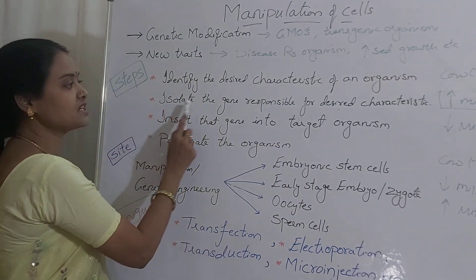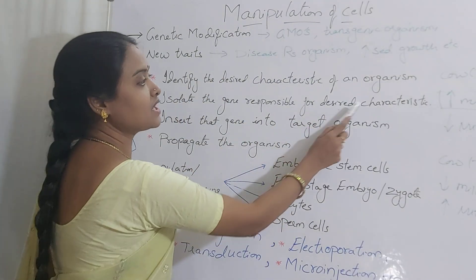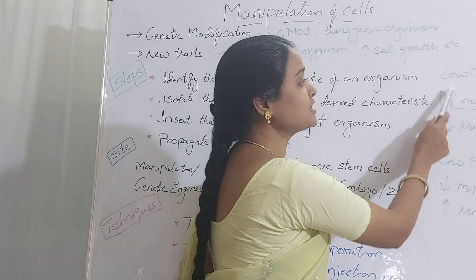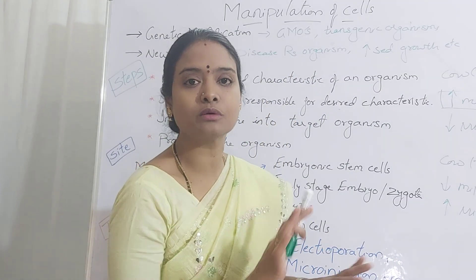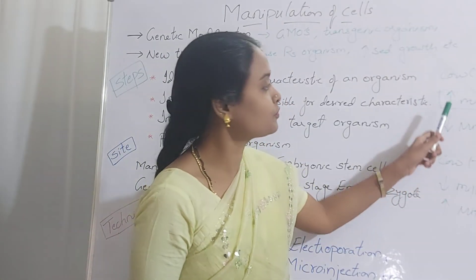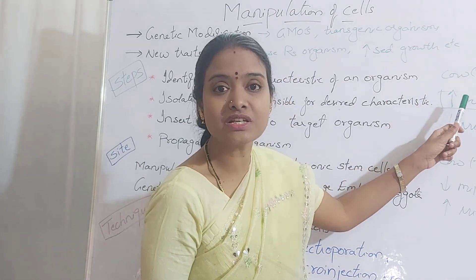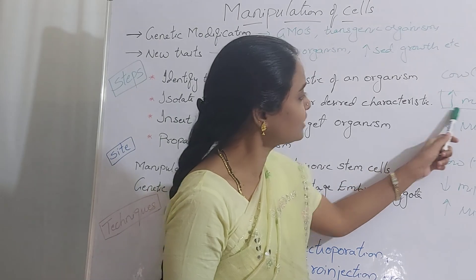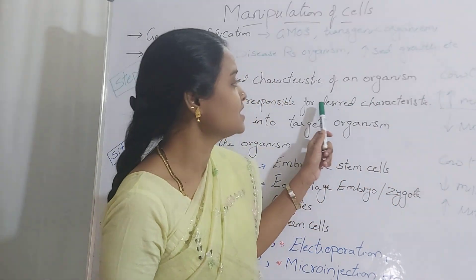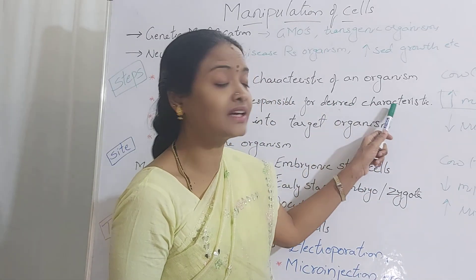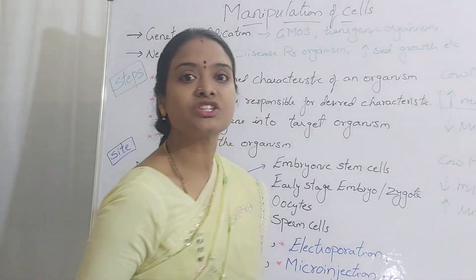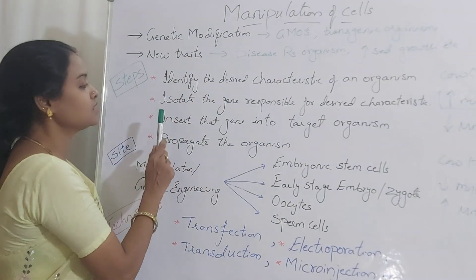The second step is to isolate the gene responsible for the desired character. From Trait 1's complete genome, you don't want the whole genome — you want only the gene responsible for increased milk production. You isolate only that particular gene, which is your desired character. This is the isolation of the gene of interest.